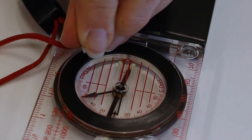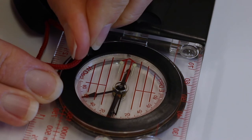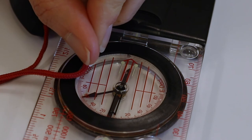To set the declination, turn the compass over and insert the key into the adjustment screw. Turn the key until the declination indicator is the correct number of degrees east or west of zero degrees.